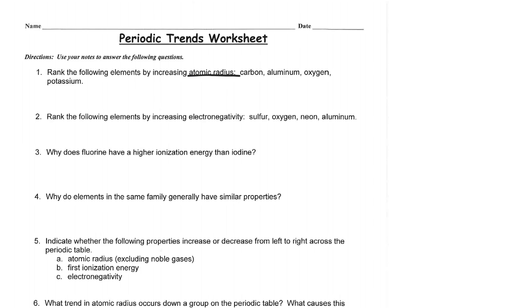Rank the following elements by increasing atomic radius. So whenever we have a rank the following problem, I think a really good strategy is to sketch out a really quick periodic table and then just plot the elements that we're focusing on so that you don't lose track of them. So our four elements are carbon, carbon is sort of up here, aluminum, sort of right here, oxygen, and potassium.